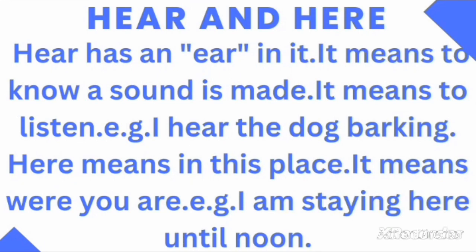Now let's look at the difference between here and hear. Here has the word ear in it. It means to know a sound is made — it means to listen. For example, I hear the dog barking. Here means in this place — it means where you are. For example, I am staying here until noon.